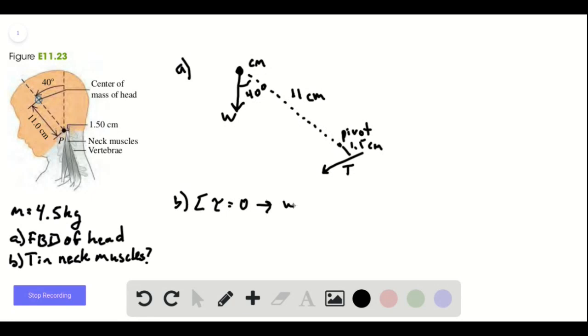This implies that the weight times our 11 centimeters times the sine of 40 degrees, because only the component of the weight that's perpendicular to the moment arm here contributes to the torque about this point.